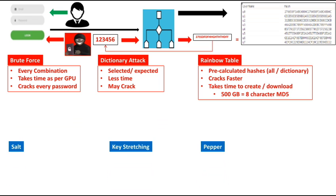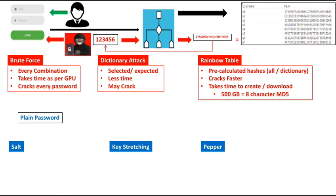There are three countermeasures to counter such attacks: salt, key stretching, and pepper. With salting, instead of putting the plaintext password directly into the hashing algorithm, the system first applies random bits known as salt. This plaintext password along with the random salt value is then fed into the hashing algorithm.